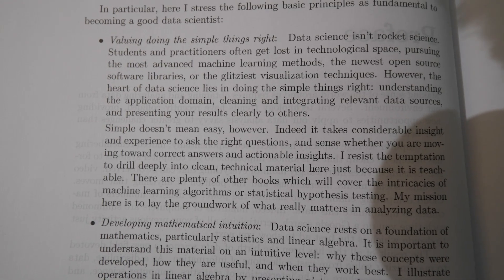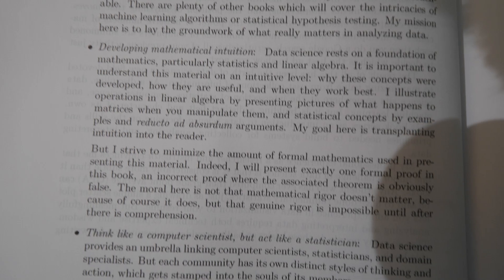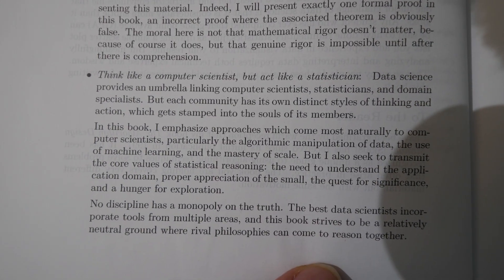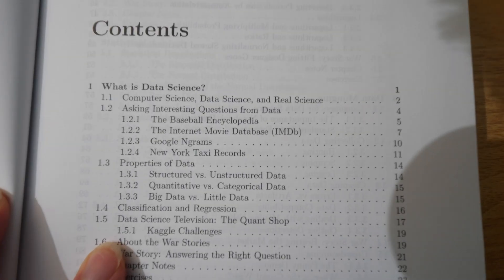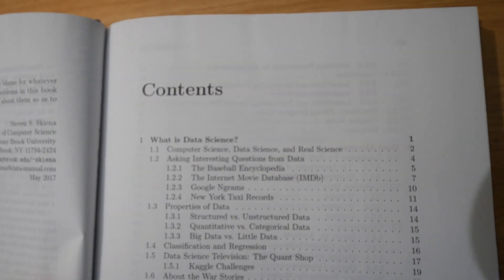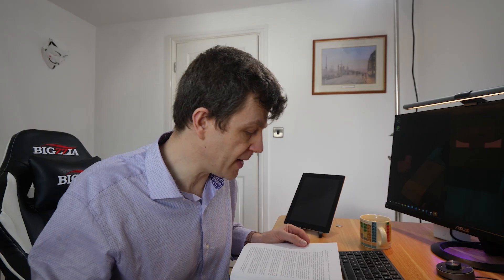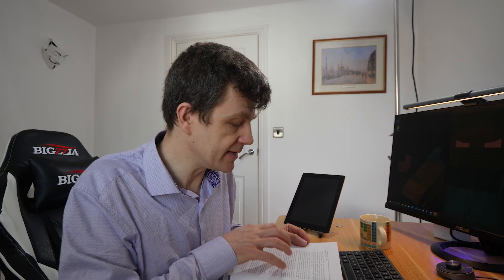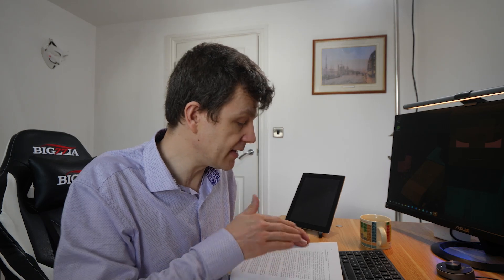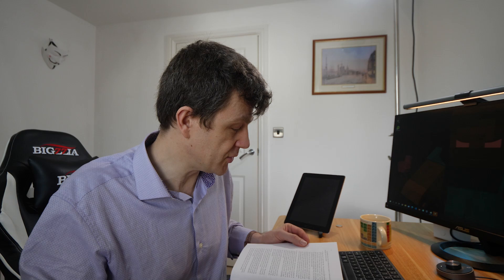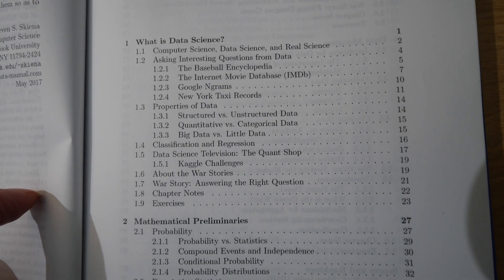So let's take a look at the contents. Stephen Skiena writes in the preface: 'I stress the following basic principles as fundamental to becoming a good data scientist — valuing doing the simple things right, developing mathematical intuition, and thinking like a computer scientist but acting like a statistician.' He says data science isn't rocket science; students and practitioners often get lost in technological space. The heart of data science lies in doing the simple things right, understanding the application domain, cleaning and integrating relevant data sources, and presenting your results clearly to others.